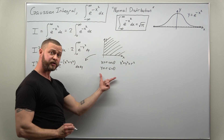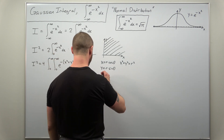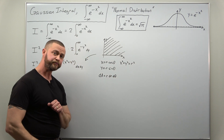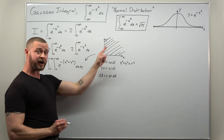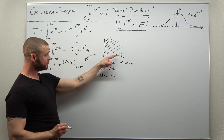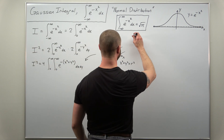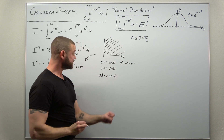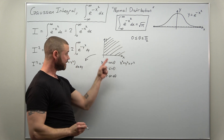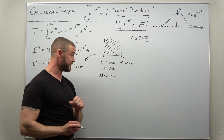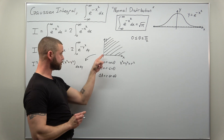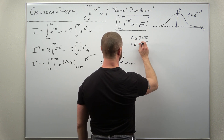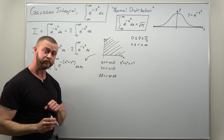The other thing we need is the differential area element in polar coordinates: dA equals r dr dθ. We also need to convert our bounds from x and y to r and theta. Theta goes from zero to pi over two, since our region is the first quadrant. And since both x and y go from zero to infinity, r goes from zero to positive infinity.